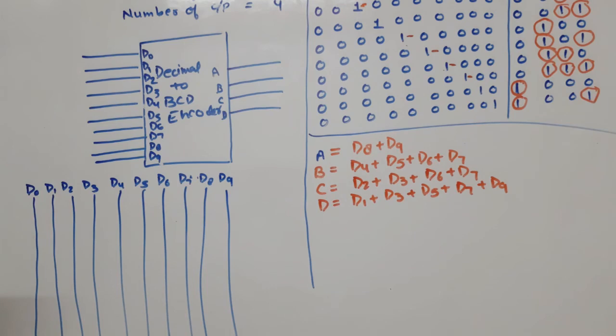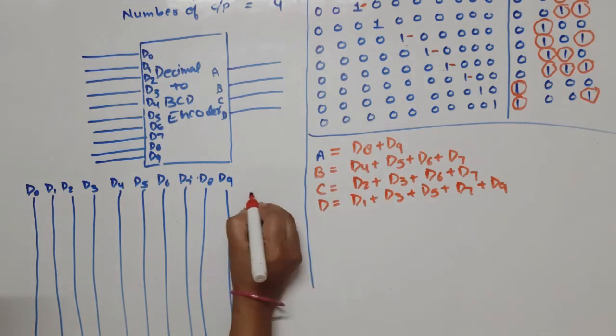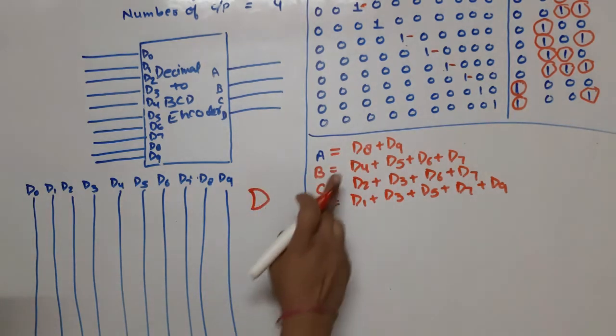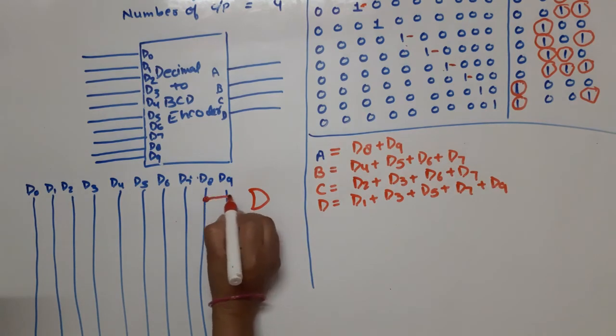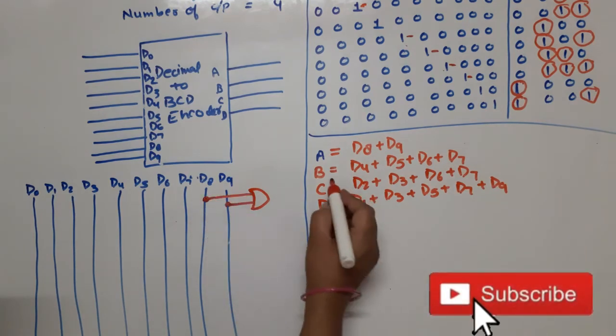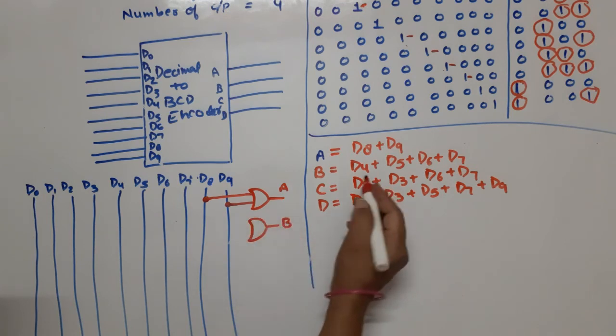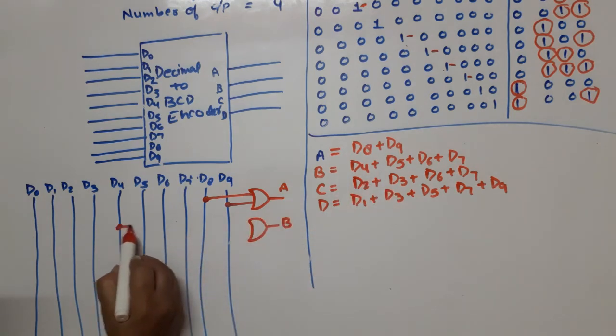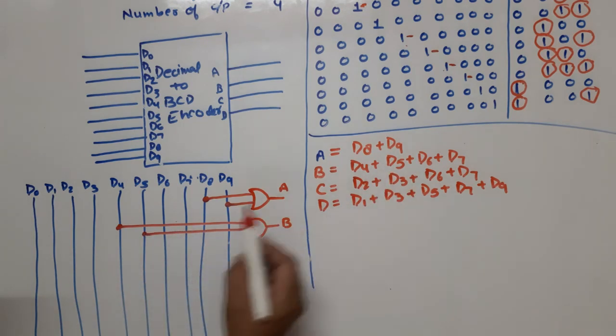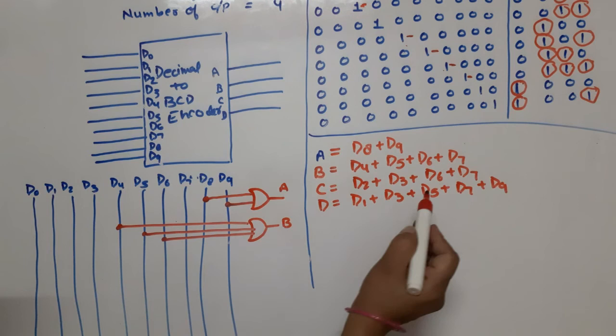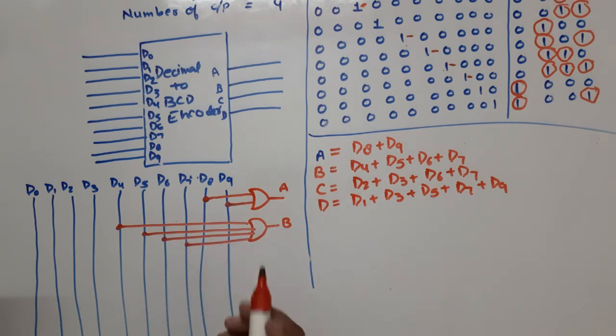Now what do we have to do? We have to show the outputs. First of all A. For A we have A equals D8 plus D9. For B, this is B equals D4 - this one - then D5, this one, then D6, this one, then D7, this one.